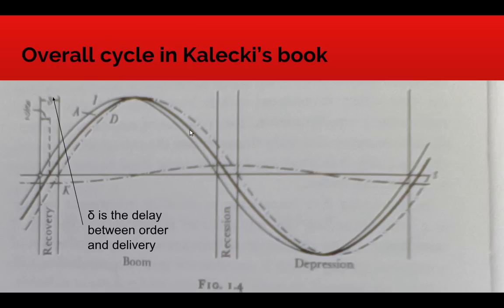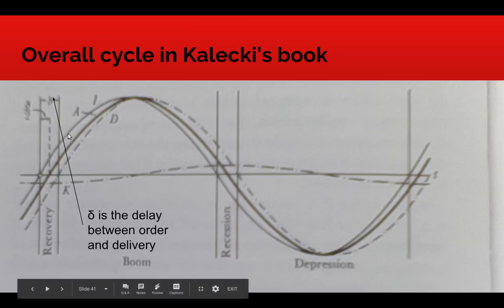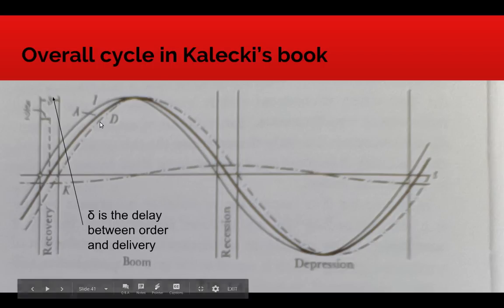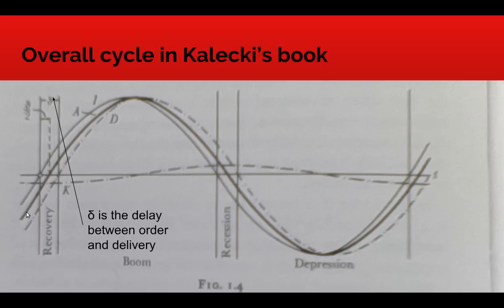This is the graph that Kalecki originally produced to show the relationship between them. The thin solid line shows investment orders, the line D shows investment deliveries, and he has a mathematical argument to show that the total level of accumulation is midway between these. The capital stock fluctuates during this process, though he says it won't fluctuate as much as investment does, because there is a big existing capital stock.